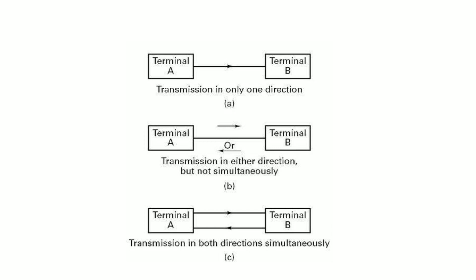In half duplex mode of transmission, data can be transmitted in both directions but only one at a time. Half duplex lines are also called one-way-alternate or either-way lines. A walkie-talkie is an example: the sender can send data and the receiver receives it, but only one can send at a time while the other only receives.